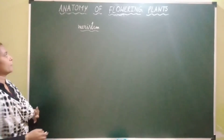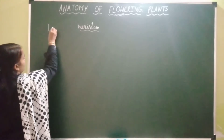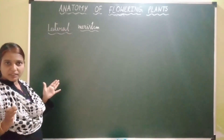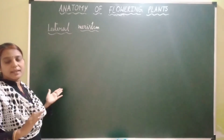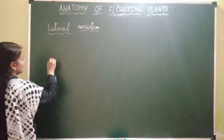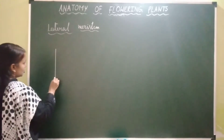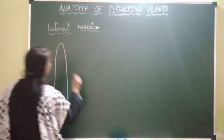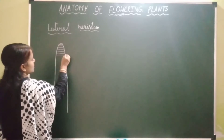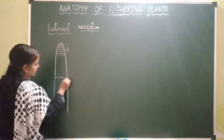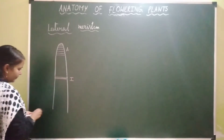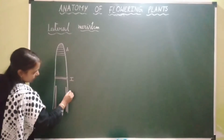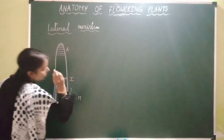Let's start with lateral meristem. As the name suggests, lateral meristem is present towards the lateral sides of plant organs like stem and root, so it is called lateral meristem. This is the shoot, this is the shoot apical meristem, this is intercalary meristem, and this is lateral meristem, which is present towards the lateral sides.